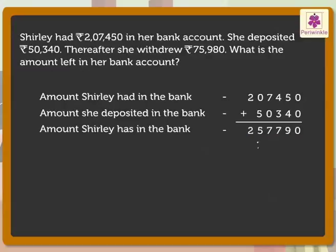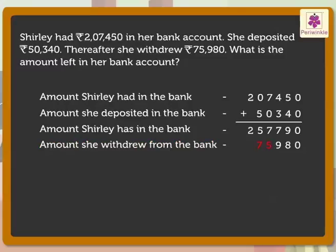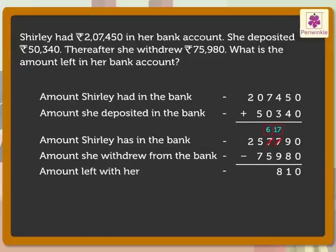We know that 75,980 rupees is the amount she withdrew from the bank. Hence, we write the statement as: Amount she withdrew from the bank = rupees 75,980. Now, to find out the amount left with her, we need to subtract 75,980 from 2,57,790.